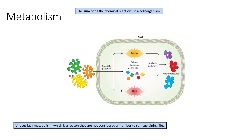Those monomers are then used in anabolic pathways to synthesize larger macromolecules that the cell needs. We're not building our cellular infrastructure on large food items — we consume large molecules, break them down into individual monomers, and then build larger compounds from those building blocks to structure the cell. In the process of breaking down and building up molecules, we release heat and produce energy, which the cell uses for its cellular processes. Viruses lack their own metabolism, which is why they are considered non-living.